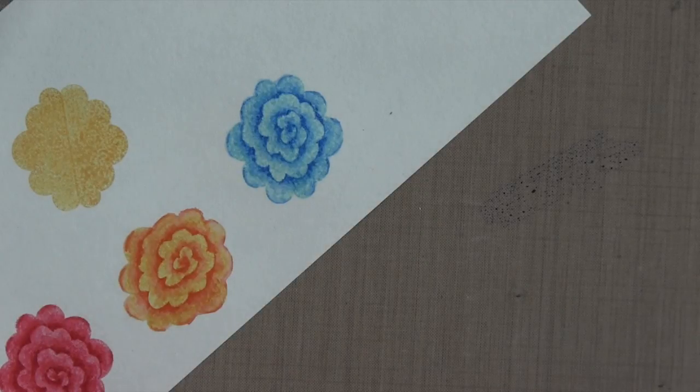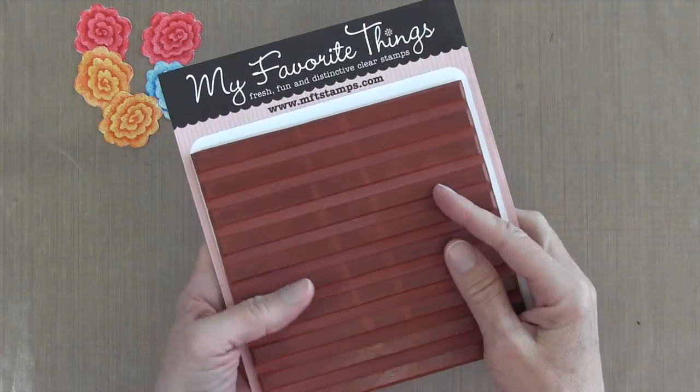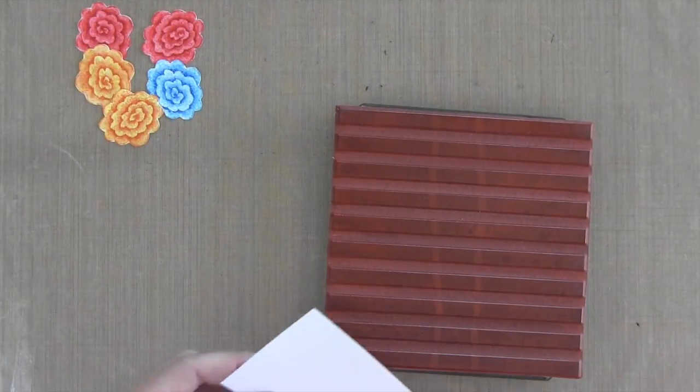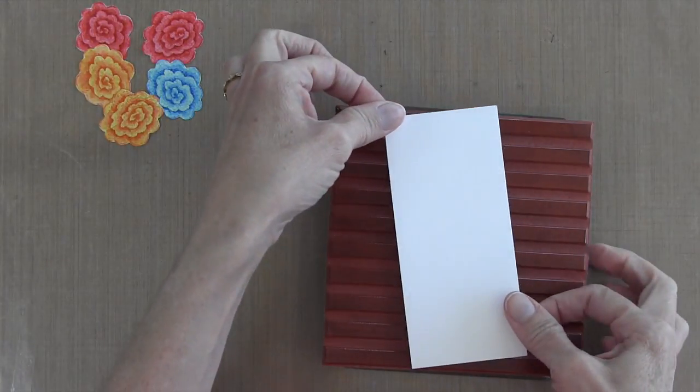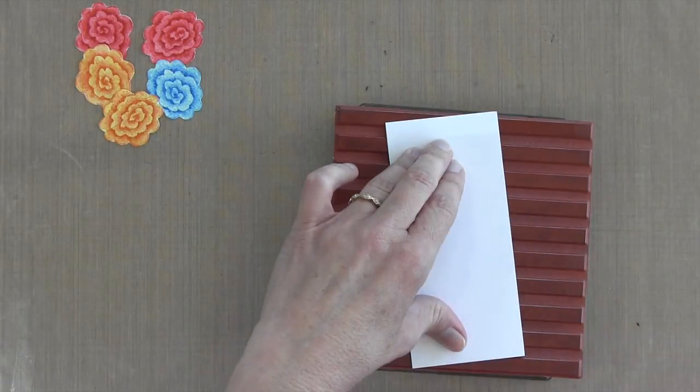All right, now it's time to create the other elements of the card. I have a piece of Neenah Solar White cardstock that's cut to two and a half by five and a half. I'm inking up this My Favorite Things striped stamp, it's a background stamp. And I'm angling it because it's not a diagonal stamp.